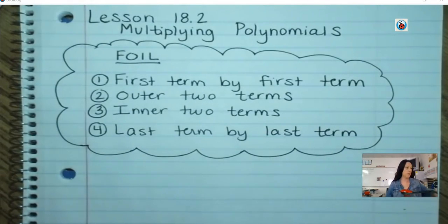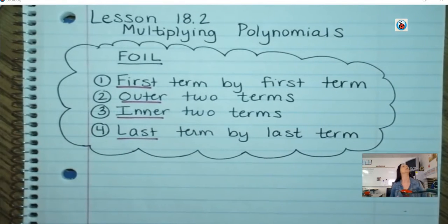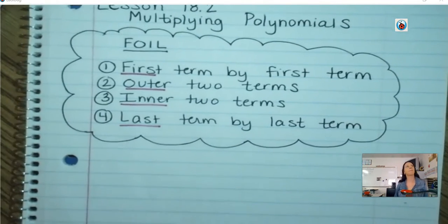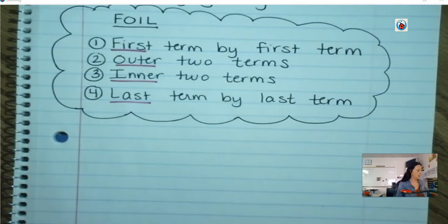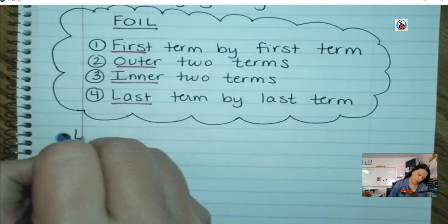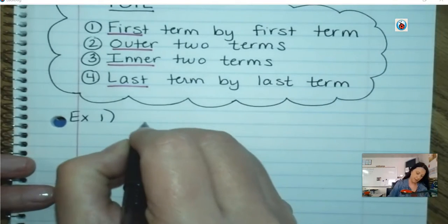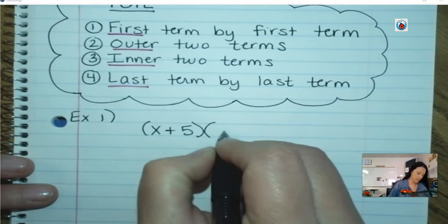They probably won't remember what it's used for, but they'll vaguely remember it. It's used for multiplying polynomials. Okay, example one. We're going to multiply x plus five times x plus two.